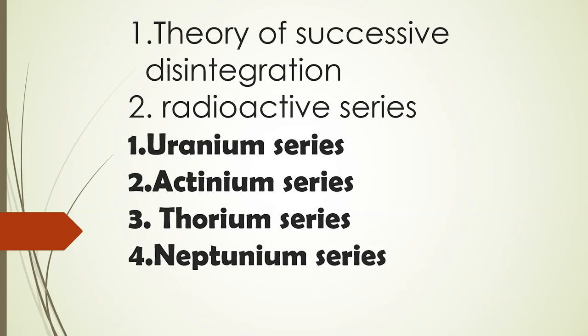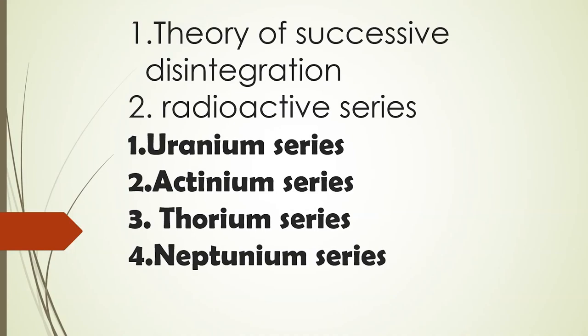We consider parent nuclei A which undergoes disintegration to form daughter nuclei B, which is unstable, and it further undergoes disintegration to form a stable end product C. This is represented as A → B → C. From the radioactive decay equation N = N₀ e^(−λt), the theory of successive disintegration gives the final equation: N₂ = N₀λ₁ / (λ₂ − λ₁) × [e^(−λ₁t) − e^(−λ₂t)].